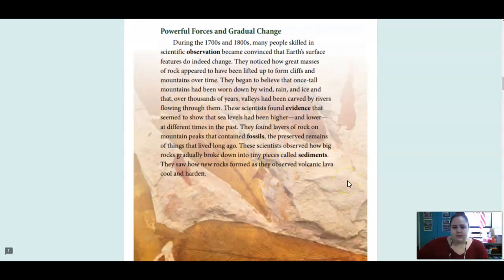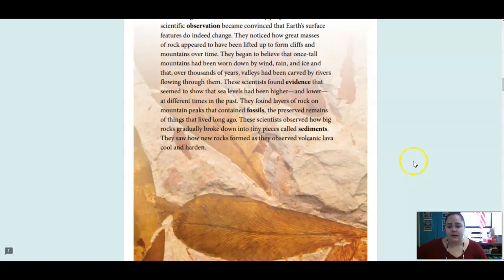During the 1700s and 1800s, many people skilled in scientific observation became convinced that earth's surface features do indeed change. They noticed how great masses of rock appeared to have been lifted up to form cliffs and mountains over time. They began to believe that once tall mountains had been worn down by wind, rain, and ice, and that over thousands of years, valleys had been carved by rivers flowing through them. These scientists found evidence that seemed to show that sea levels had been higher and lower at different times in the past. They found layers of rock on mountain peaks that contained fossils, the preserved remains of things that lived long ago. These scientists observed how big rocks gradually broke down into tiny pieces called sediments. They saw how new rocks formed as they observed volcanic lava cool and harden.